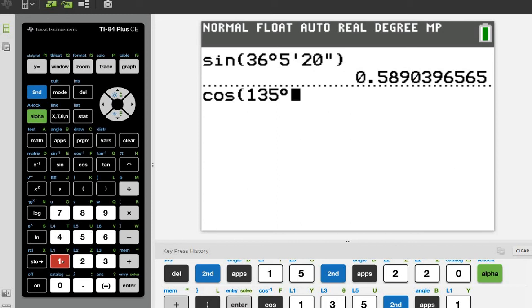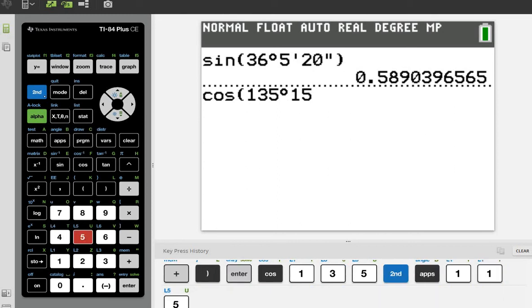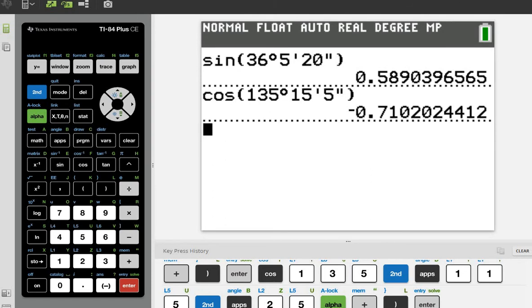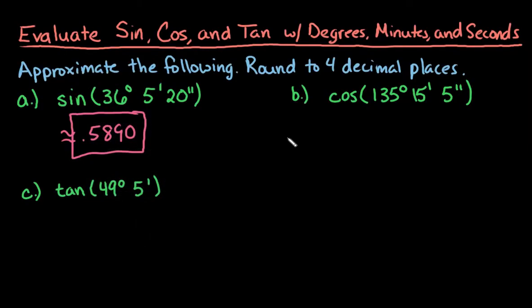And our next one was 15 minutes, so I would do 15, second apps, option two. And then our last one was five seconds, so I would do five and alpha plus. So now I have that entered in and just hit enter and it gives us negative 0.7102. So notice on this one that it is negative.